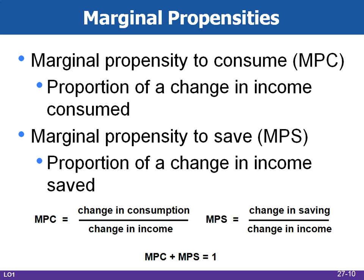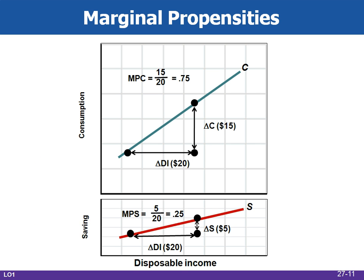Marginal propensity to consume, or MPC, is the fraction or proportion of any change in income that is consumed: MPC equals change in consumption divided by change in income. Marginal propensity to save, MPS, is the fraction or proportion of any change in income that is saved: MPS equals change in savings divided by change in income. This is also the slope of the line when graphed. Note that MPC plus MPS equals 1 — an easy way to check your math. Figure 27.3 shows MPC and MPS as the slopes of the consumption and savings schedules.